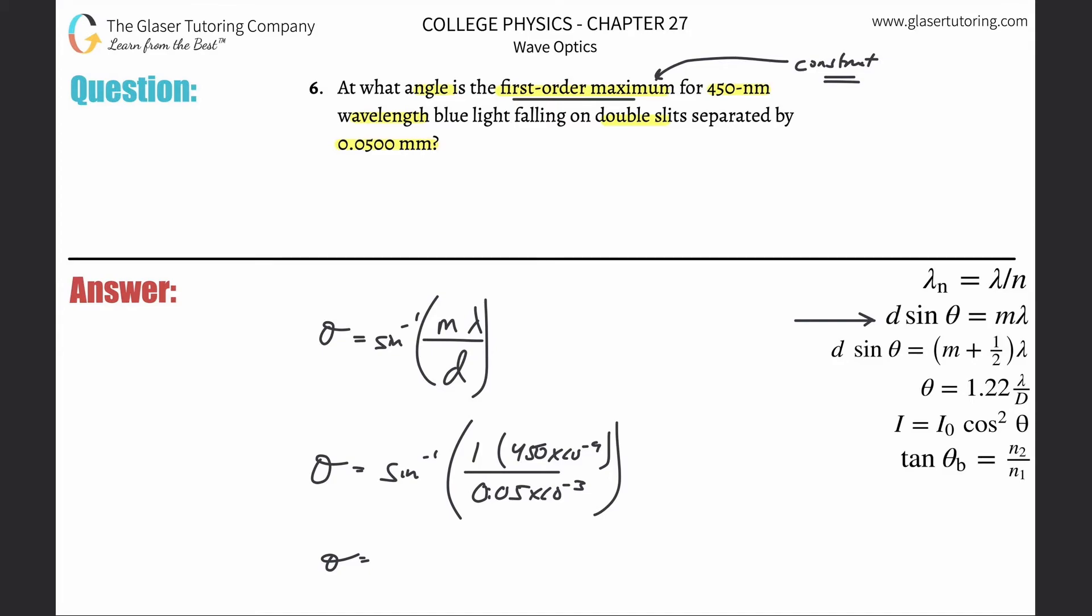All right, and voila. Make sure your calculator, by the way, is in degree mode, okay? Otherwise you're going to get a radian measure. Not that it's wrong, but if they want it in degrees, well, I guess that would be wrong. So inverse sine of 450 times 10 to the minus ninth, divided by 0.05 times 10 to the minus 3.